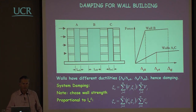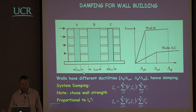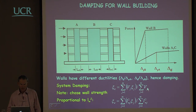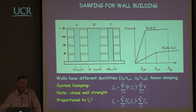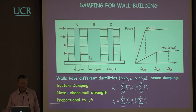In force-based design we don't deal with different ductility demands — we just ignore it. But in displacement-based design we can make a rational consideration. The system damping is found by the sum of the shears of the different lateral force-resisting elements times their individual damping divided by the sum of the shears. To do that we need to know how much shear each wall carries — but we don't know this at the start of the design process. The first thing we do is use intelligent design based on experience.